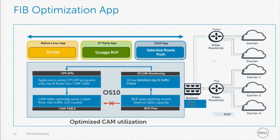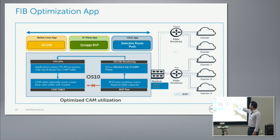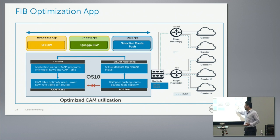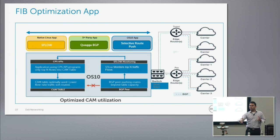Using the CPS APIs — the programmability of the switch — we use the CPS API to push those top end routes to the hardware. The packages we use are: the Sflow agent on the switch, Quagga BGP for getting all the BGP routes, and the Sflow collector running on an external VM — Sflow RT — to collect all the top end flows. We also run a web server on the switch that programs these routes using the CPS API, calling those CPS APIs via HTTP GET or HTTP POST to install all those routes in hardware.